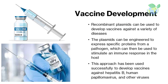Vaccine development is another major application. Recombinant plasmids can be used to develop vaccines against a variety of diseases. The plasmids can be engineered to express specific proteins from a pathogen, which can then be used to stimulate an immune response in the host. This approach has been used successfully to develop vaccines against hepatitis B, human papillomavirus, and other viruses.